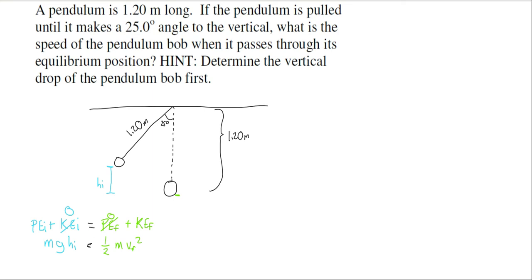Now, what do we know? We don't know mass. We know g — that's 9.8. We don't know the initial height, and we don't know the final velocity, which is what we're looking for. But notice: mass appears on either side of the equation, so we can divide both sides by mass — it cancels out. The mass of the pendulum bob has no impact on our situation at all. That's very convenient.